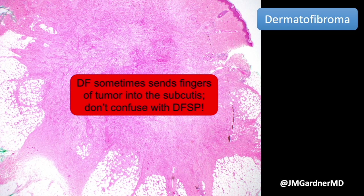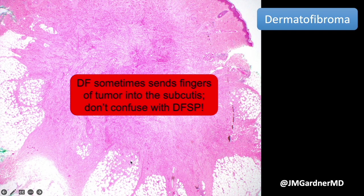Sometimes you can see dermatofibromas actually centered completely in the subcutis, or mostly in the subcutis. Finger-like extension into the subcutaneous fat is relatively common. One helpful clue: when dermatofibroma extends into fat, fat necrosis often occurs — fat cells of variable size, foamy histiocytes, and a little inflammation. Whereas DFSP infiltrating fat is very clean — it wraps the fat tightly, and the fat seems trapped but not dying, without foamy histiocytes.